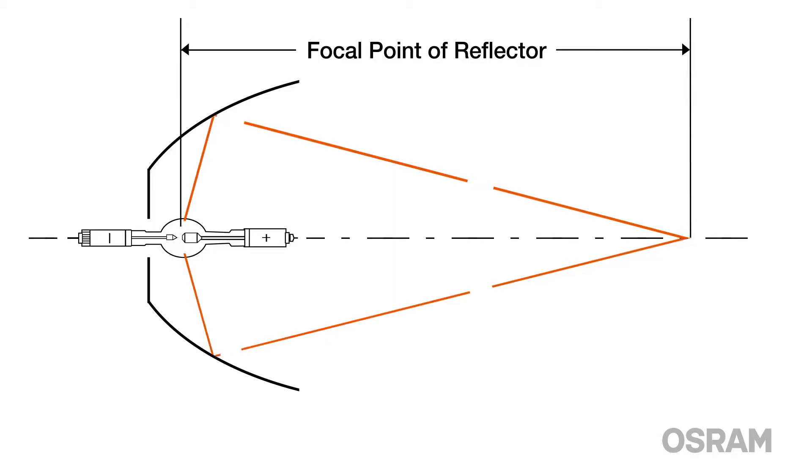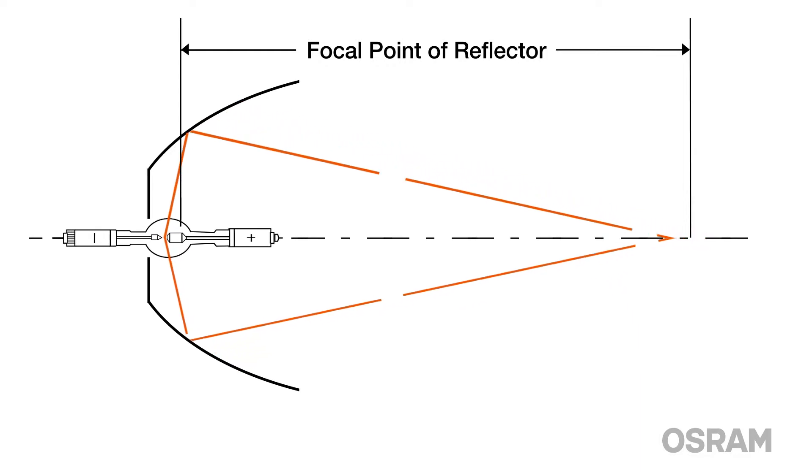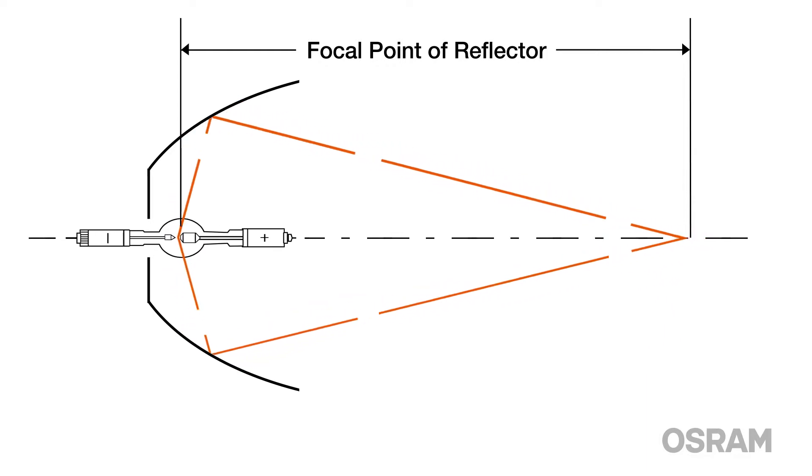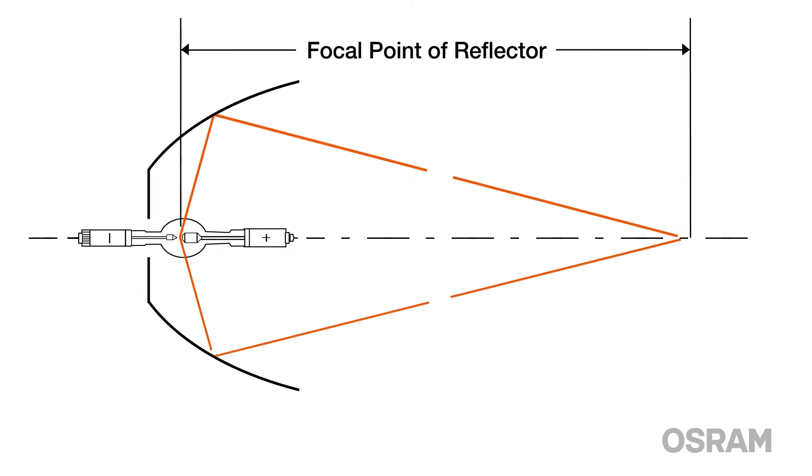What you are actually doing when you are performing an alignment is positioning the tip of the cathode lamp electrode in the focal point of the reflector. 80 to 90% of all the light being produced by the lamp is being generated at this tip, so precise positioning is needed to achieve optimal alignment and light output.